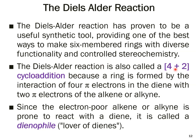The Diels-Alder reaction is also called a 4+2 cycloaddition because a ring is formed by the interaction of four pi electrons in the diene with the two pi electrons of the alkene or alkyne. Since the electron-poor alkene or alkyne is prone to react with a diene, it is called the dienophile — literally 'lover of dienes' — because the electron-poor dienophile tends to accept electrons from the electron-rich diene, and that is the main driving force of this reaction.